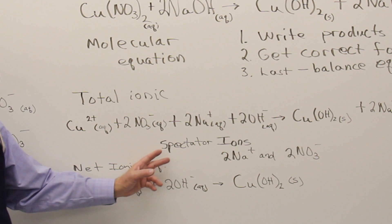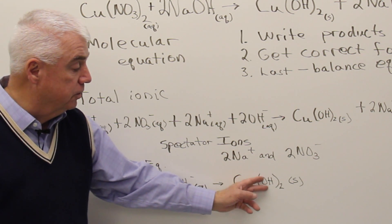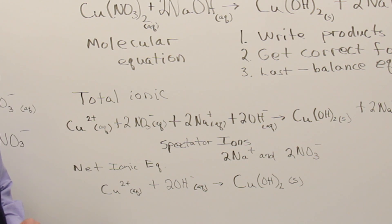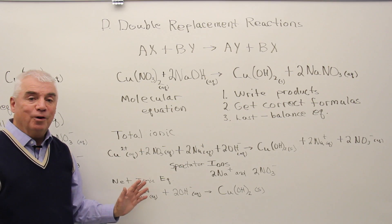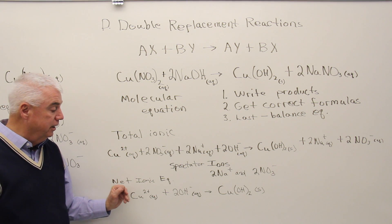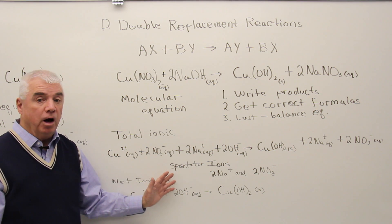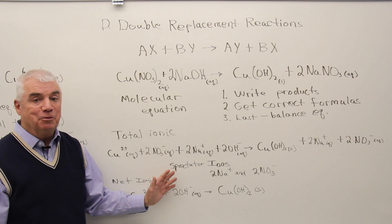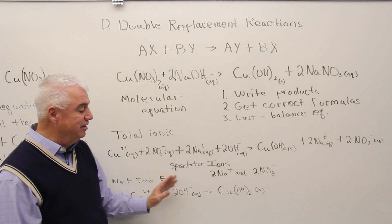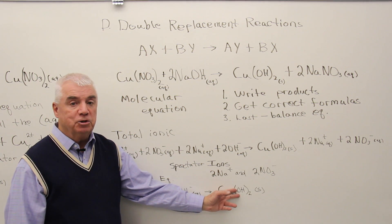Now let's look for the spectator ions. Nitrate appears on both sides — it's a spectator. Sodium ions, 2 Na⁺, also appear on both sides — they're spectators too. Taking those out of the equation, what we have left is the net ionic equation: Cu²⁺ aqueous plus 2 OH⁻ aqueous gives Cu(OH)₂ solid — a precipitate forms. It's a generic equation: any soluble form of copper ion reacted with any soluble hydroxide — sodium hydroxide, potassium hydroxide, magnesium hydroxide — will give us a precipitate.